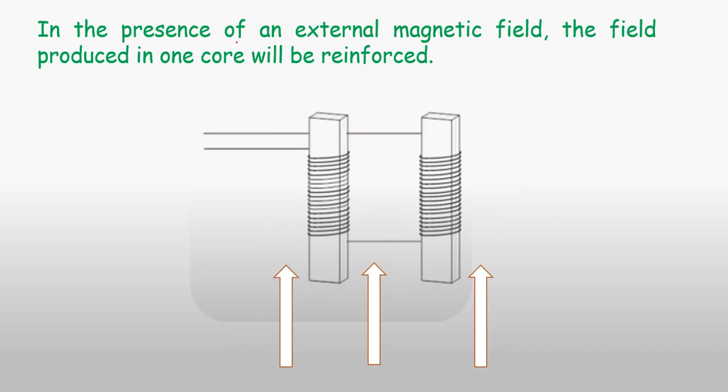When we place our two parallel bars in an external magnetic field, in this case the Earth's magnetic field, one of these cores will have its magnetic fields in the direction of the Earth's magnetic field, while the other one is the other way around. This magnetic field due to core A is reinforcing the magnetic field due to the Earth, while the second one is facing in a different direction, so it's getting reduced.